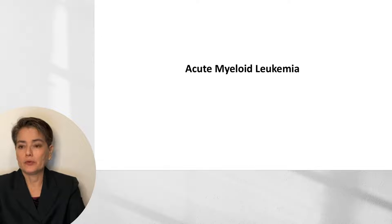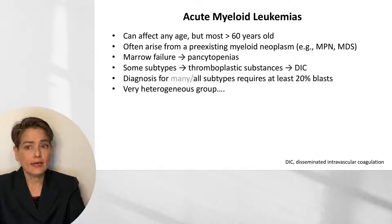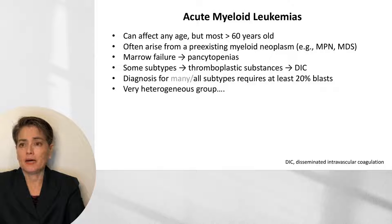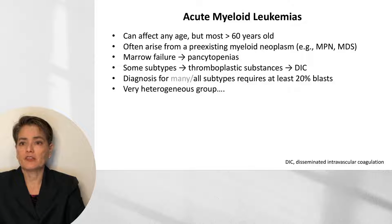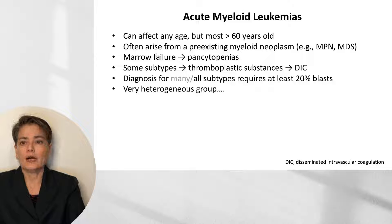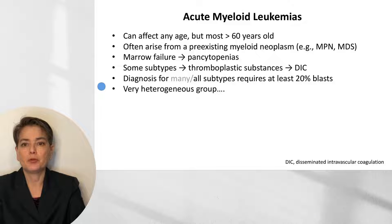Acute myeloid leukemias can affect any age, but most patients are over 60. They often arise from a pre-existing myeloid neoplasm such as MPN or MDS, and are characterized by marrow failure leading to pancytopenias. Some subtypes release thromboplastic substances, resulting in disseminated intravascular coagulation. Traditionally, diagnosis required at least 20% blasts, but the WHO is considering removing that requirement for certain AMLs with defined genetic aberrations.